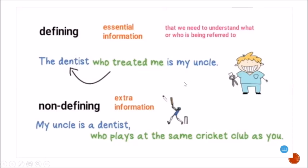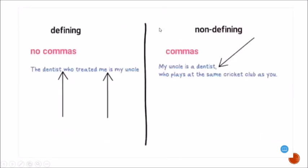In non-defining relative clauses, we give extra information that is not essential and that we can omit. For example: 'My uncle is a dentist who plays at the same cricket club as you.' If we omit the second part — 'who plays at the same cricket club as you' — the first clause remains the same and still makes complete sense.